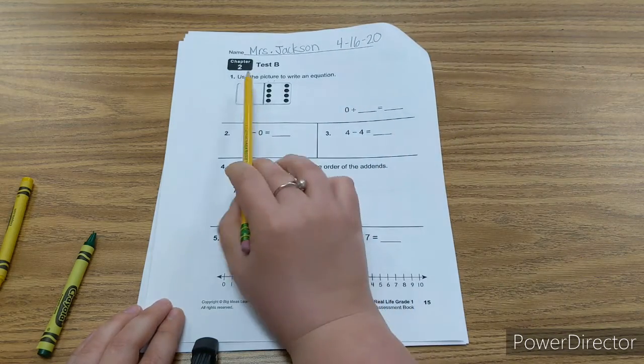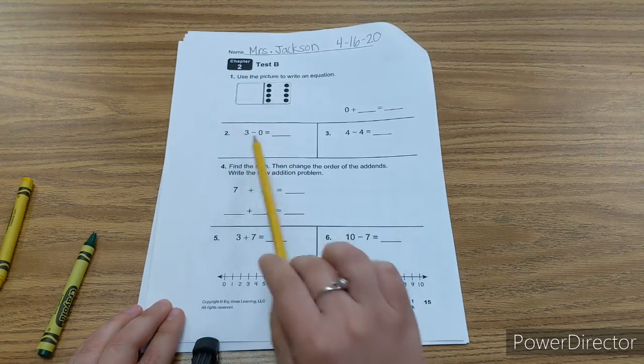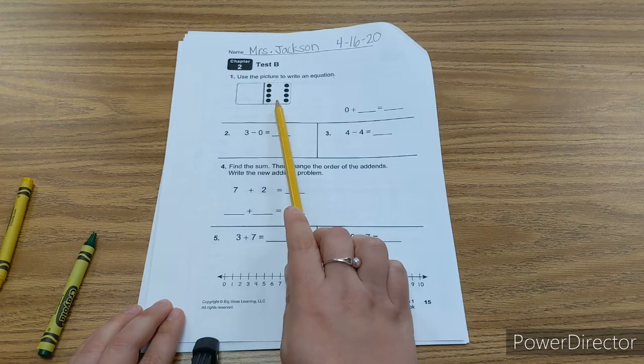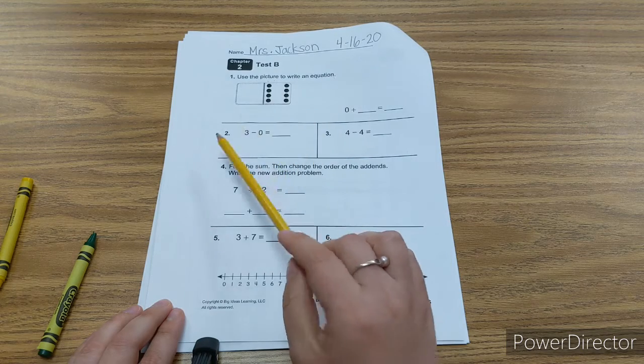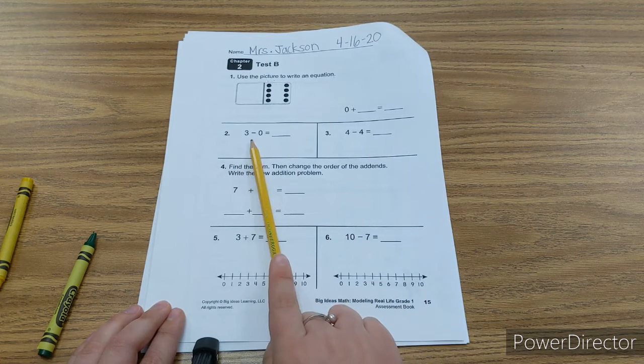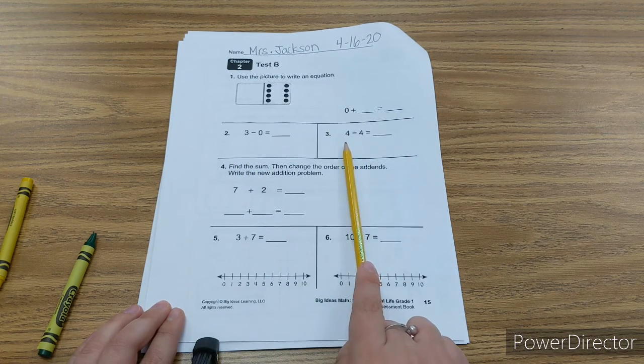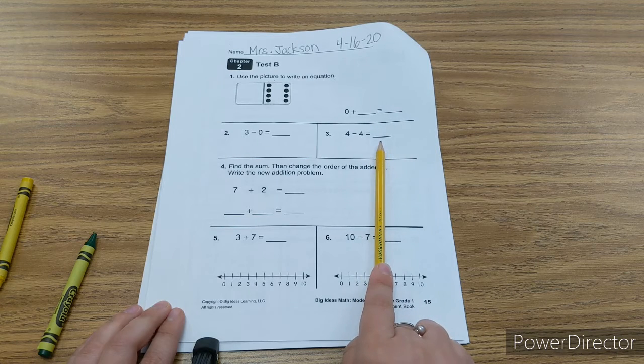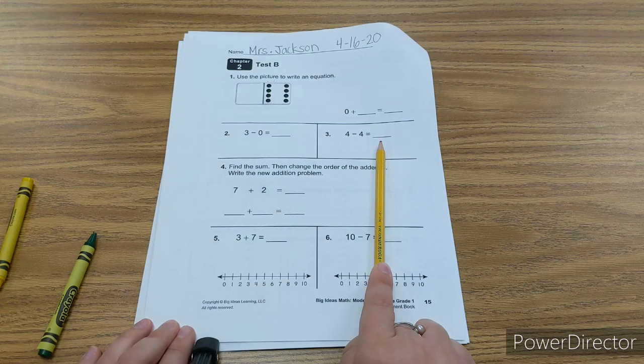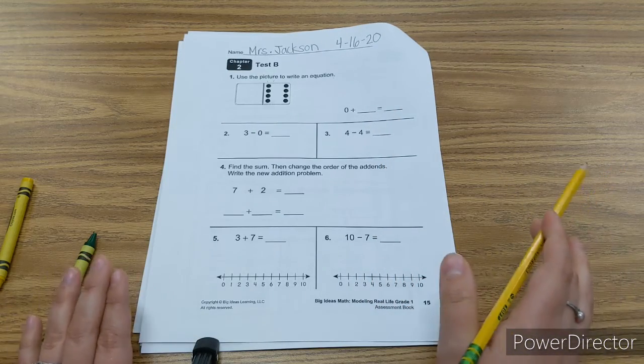And my date is 4-16-20. Use the picture to write an equation. So you know you have zero plus hmm equals hmm, three minus zero equals hmm, four minus four equals hmm. Pause as needed, boys and girls.